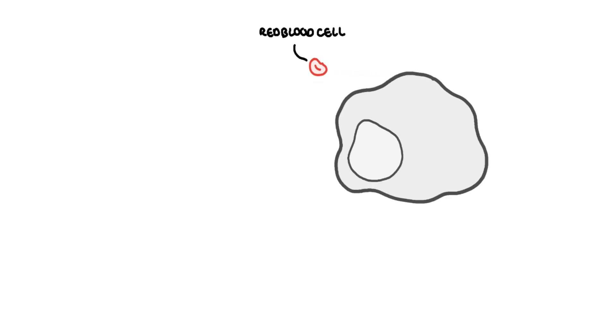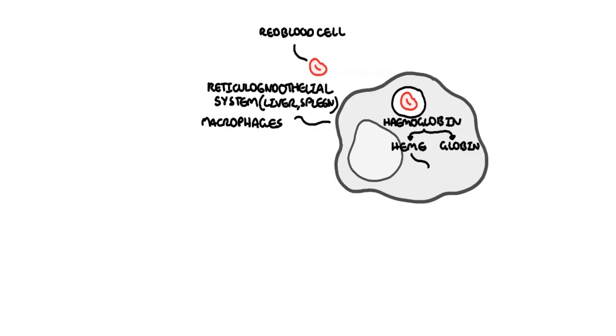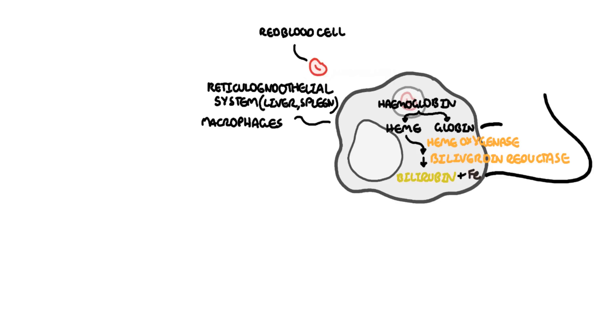The story starts with an old red blood cell which enters the reticuloendothelial system, which is in your liver and spleen. Here they are engulfed by macrophages. The red blood cells contain many hemoglobin molecules which are broken down to heme and globin. Heme is further broken down by two enzymes: heme oxygenase followed by biliverdin reductase, forming bilirubin and iron. The iron and globin are recycled to make more red blood cells.